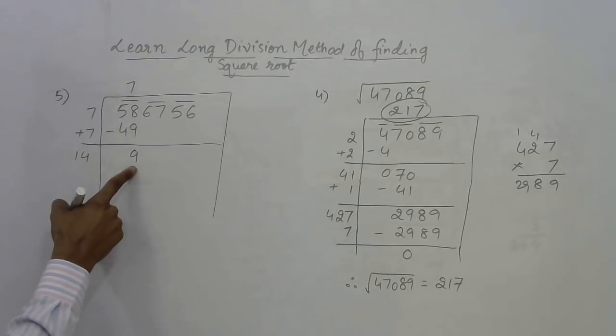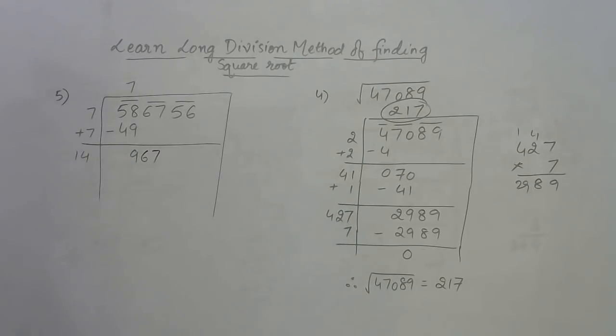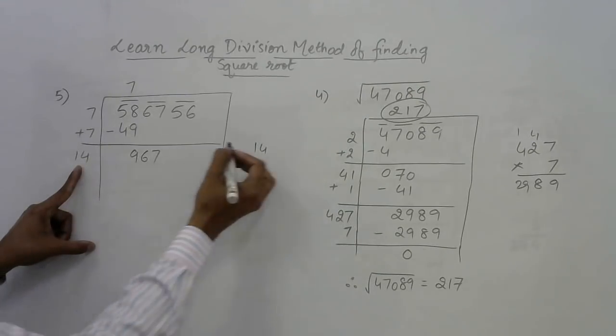14 is more than 9, so you have to bring the next pair down—67. And now I need to convert this into a three digit number: 140. By observation, 146 into 6.